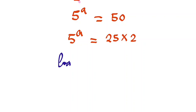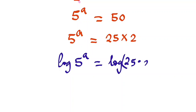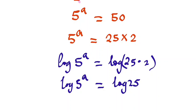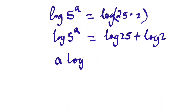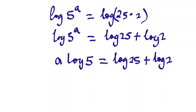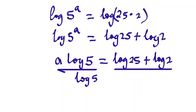So we have log of 5 to the power of a equals log of 25 times 2. Expanding the right side, that gives us log of 25 plus log of 2. Using the power rule on the left, we get a times log of 5 equals log of 25 plus log of 2. Now the next step is to divide both sides by log 5.